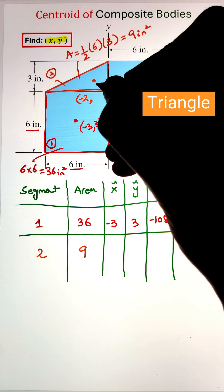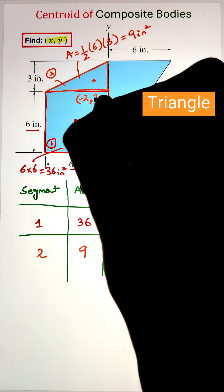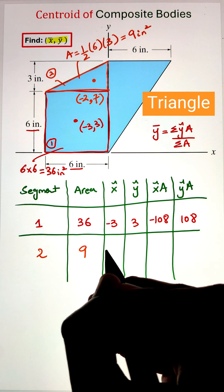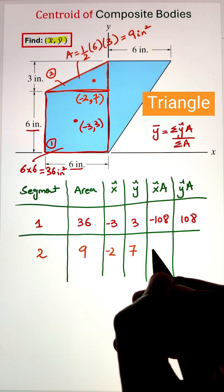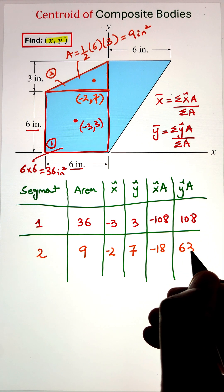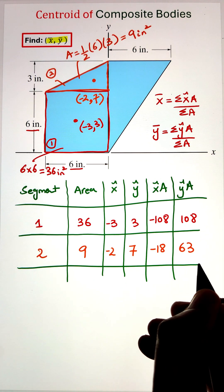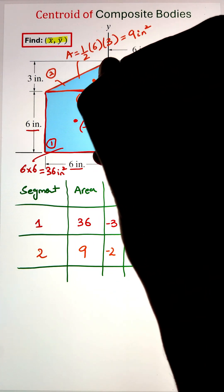Whereas vertically, since our triangle starts at 6 inches above the origin, it will be one-third of 3. However, since that is starting 6 inches above the origin, the value will be 6 + 1 = 7. Multiplying the coordinates of centroid, -2 and 7, with the area 9 gives us the values of -18 and 63 respectively.